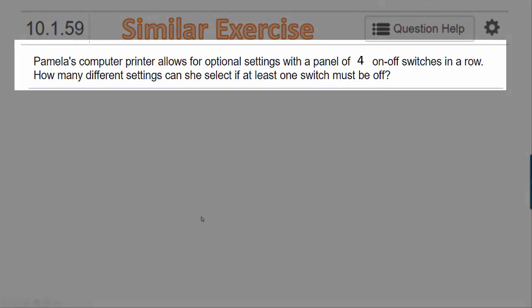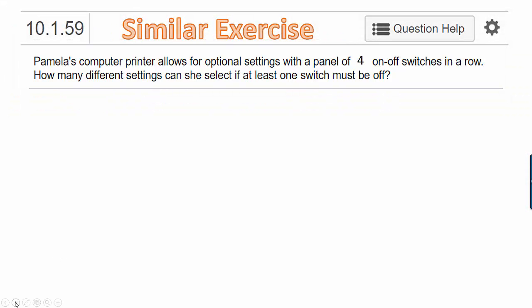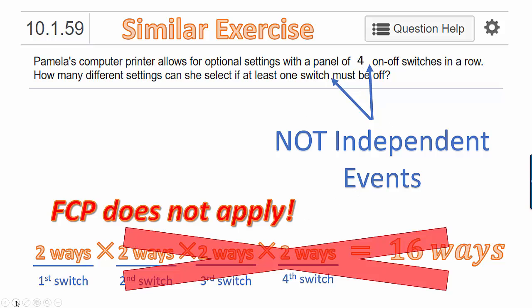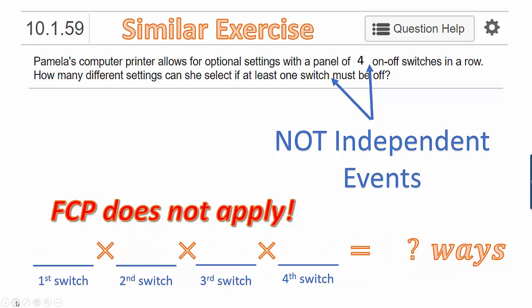Let's look at a similar problem. Pamela's computer printer allows for optional settings with a panel of four on-off switches in a row. How many different settings can she select if at least one switch must be off? You might think you would approach the problem the same way, but since at least one switch must be off out of the four, these may not be independent events. If they're not independent events, then the fundamental counting principle does not apply and we can't use the same technique.